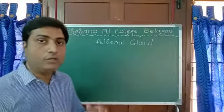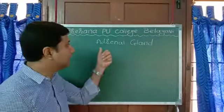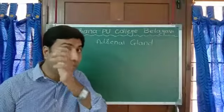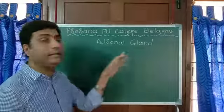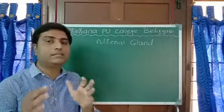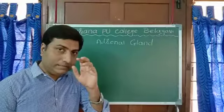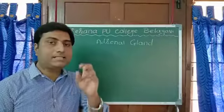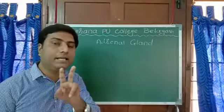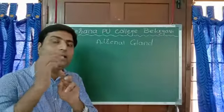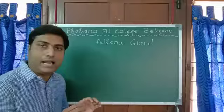Next we will move on to the next gland called the adrenal gland, another endocrine gland. 'Renal' is something related to kidney, so these glands are present over the kidney. We have two kidneys, and on each kidney the adrenal gland sits like a cap-like structure.